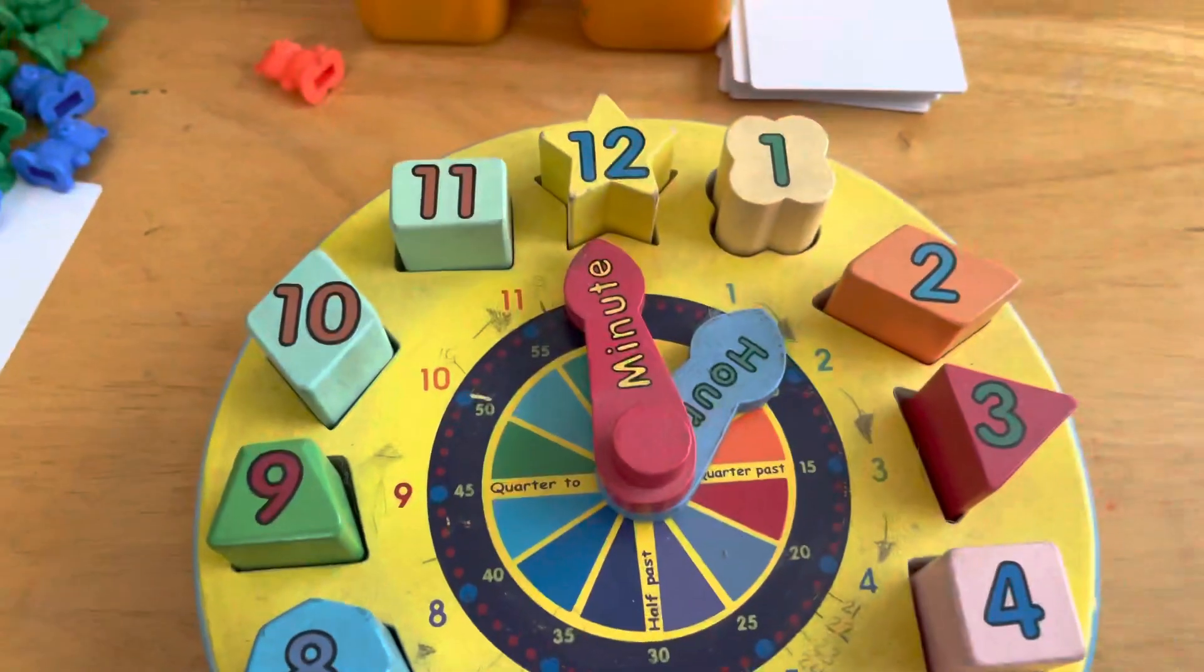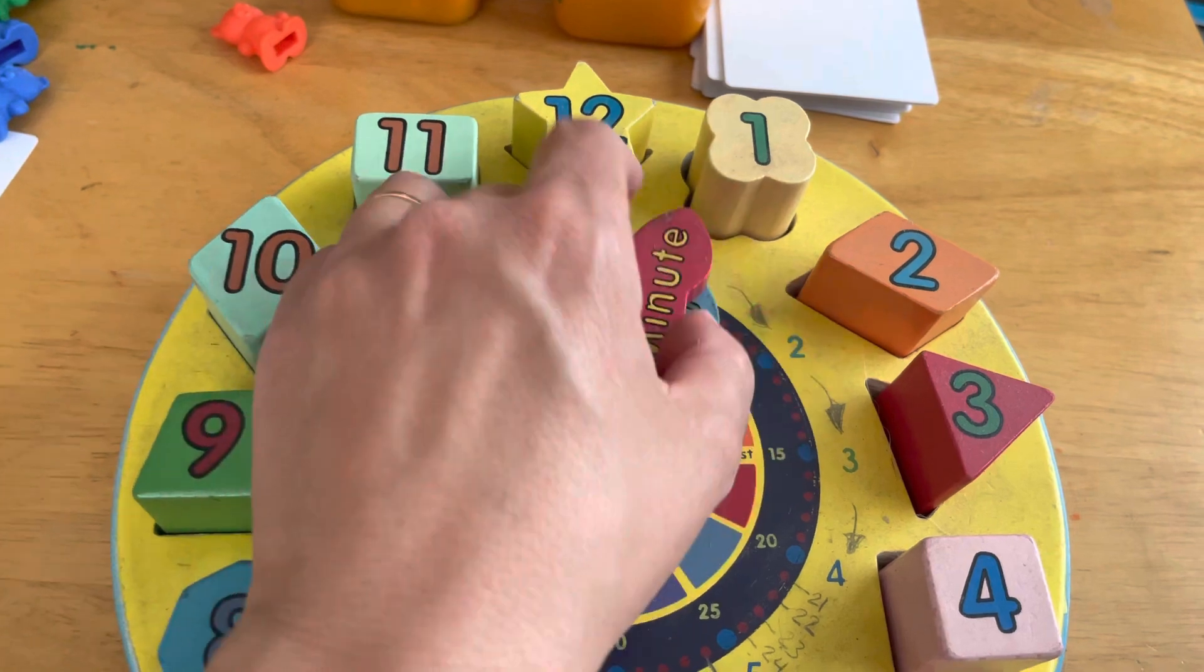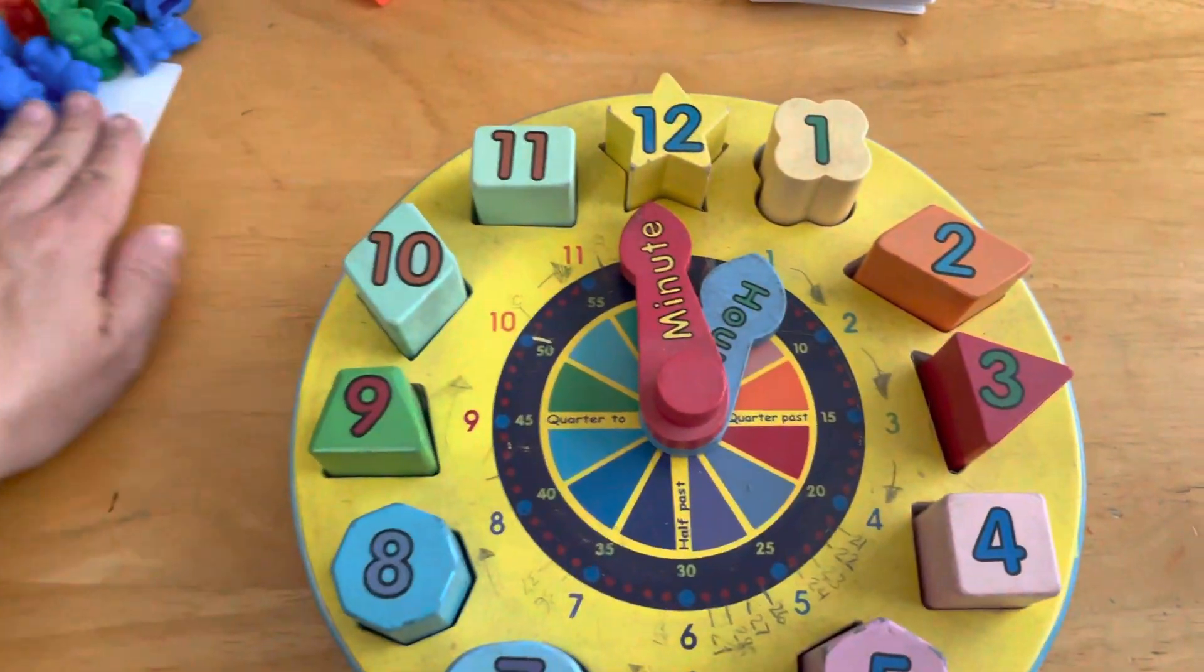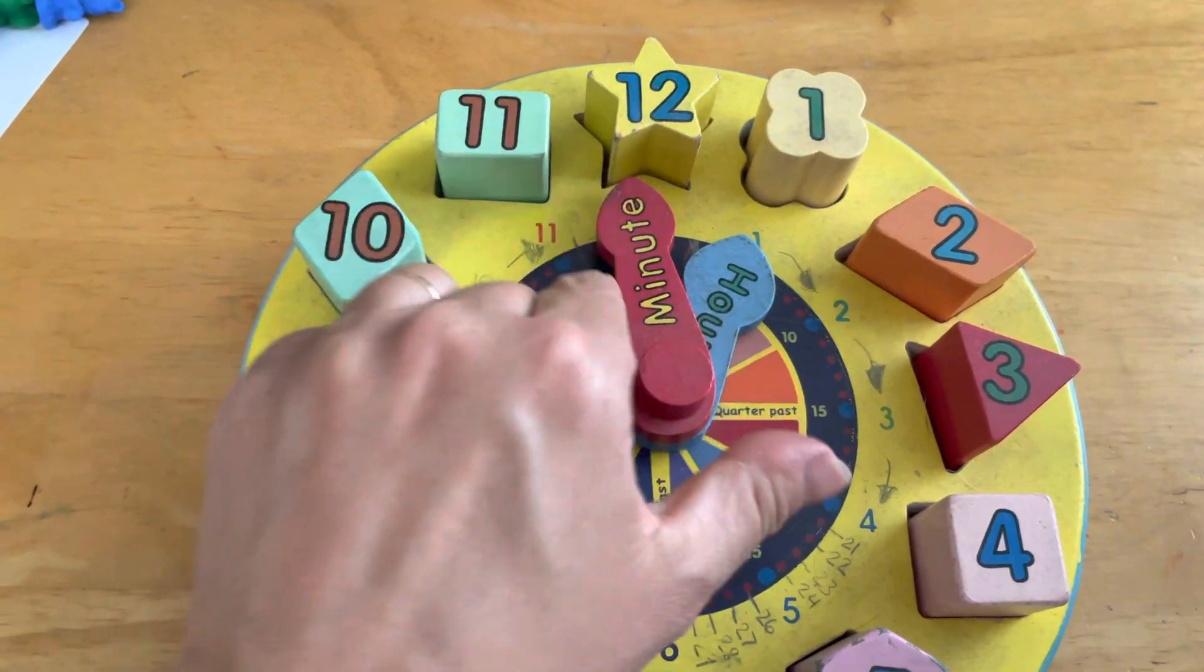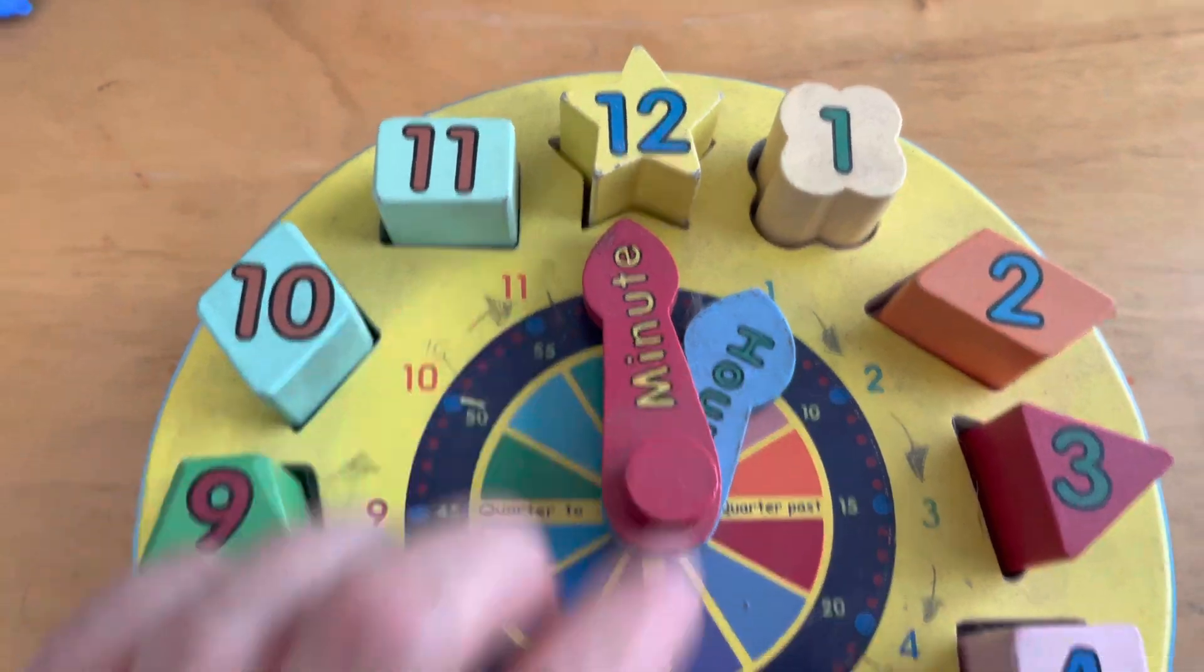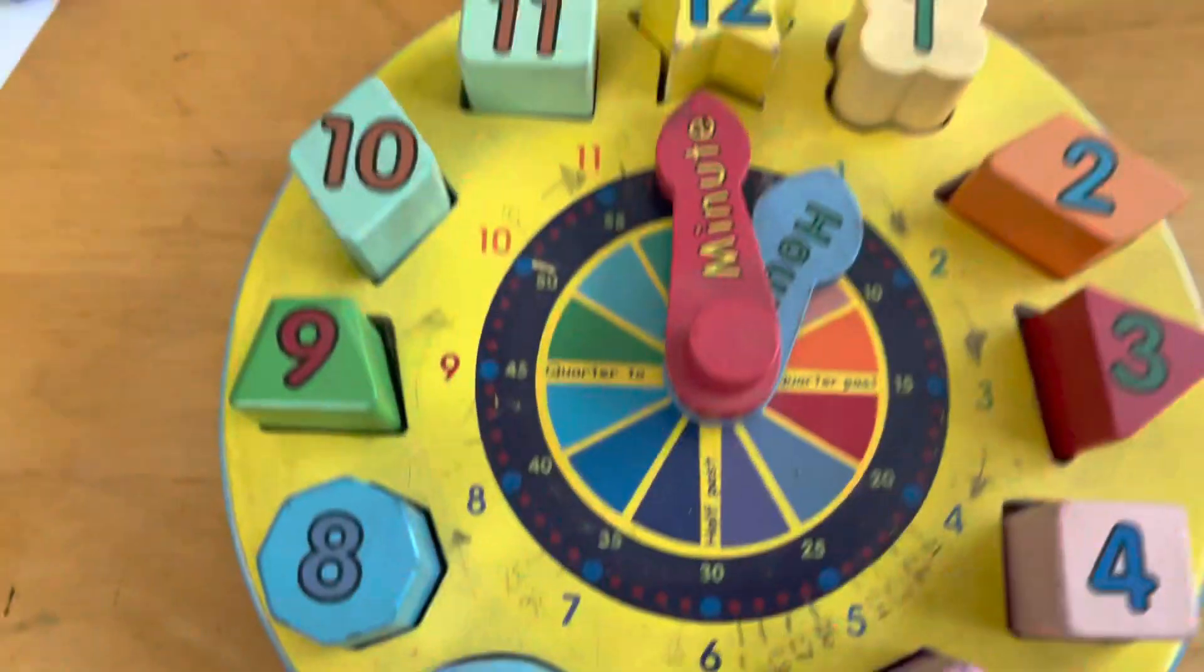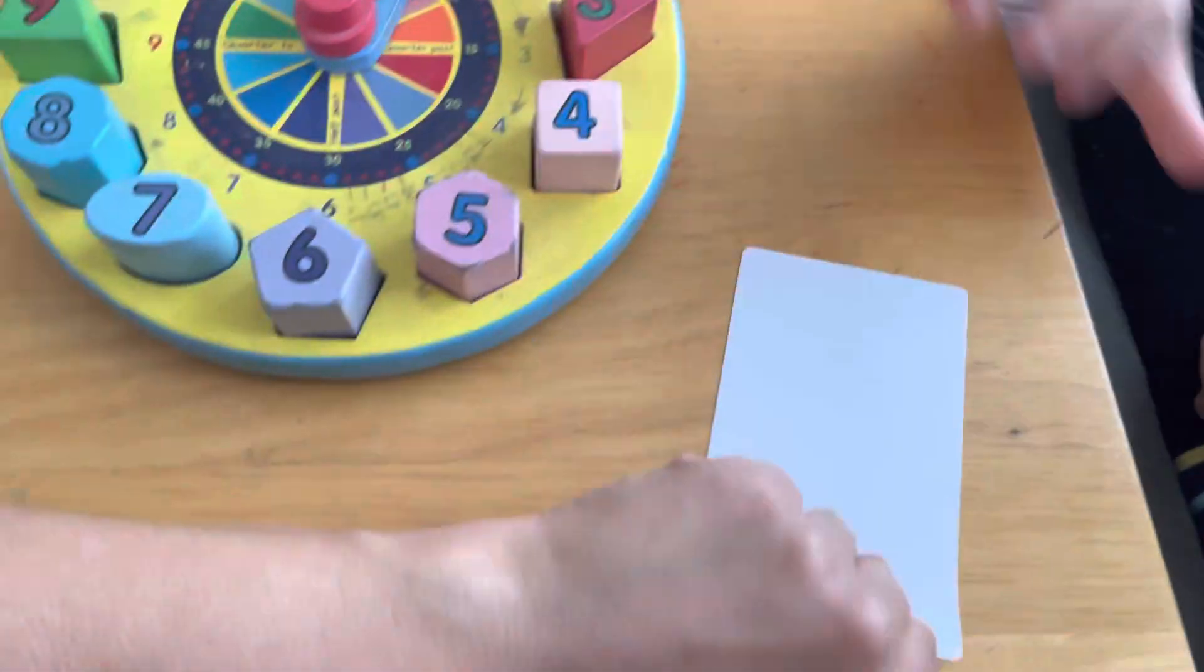And so this is what it looks like on the... make sure I gotta twist it around. No, wait a minute. Okay, so one o'clock looks like that, right Caroline? One o'clock. And that means one o'clock. Okay, and that's what this looks like. One o'clock, one o'clock.